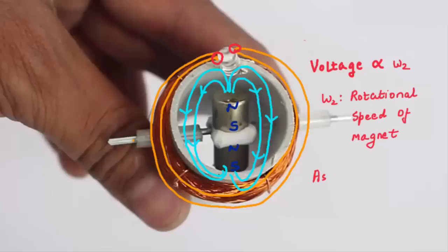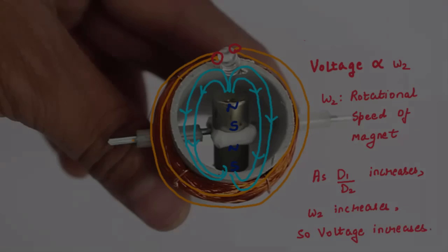So the voltage generated in the coil is proportional to d1 by d2. As the bigger wheel becomes bigger or the smaller wheel becomes smaller, we will generate more voltage.